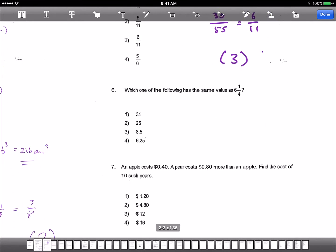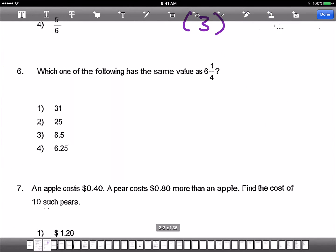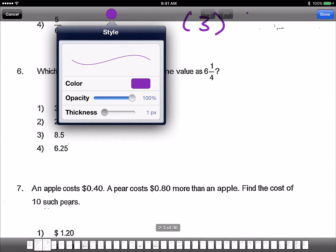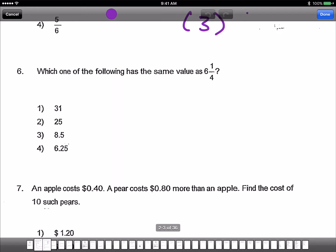Next, which one of the following has the same value as 6 and 1 quarter? So 6 and 1 quarter. Well, straight off is 4. Why? Because 0.25 equals to 1 quarter.